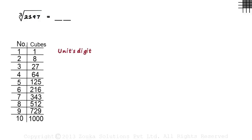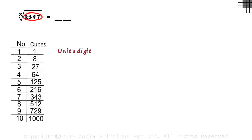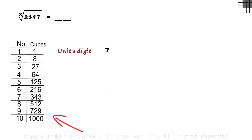The units digit of 2197 is 7. So we look at our table. In the cubes column, we look for a number which has its units digit as 7.